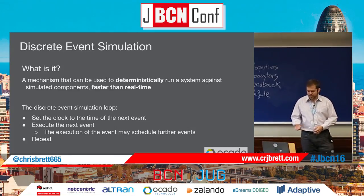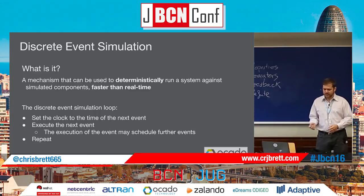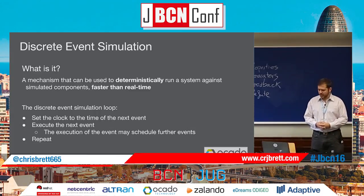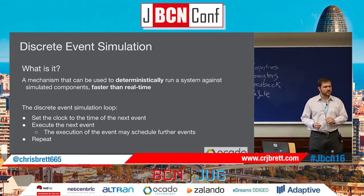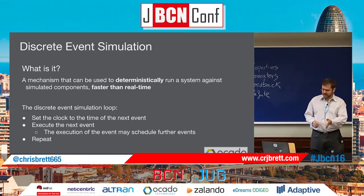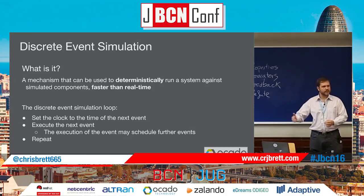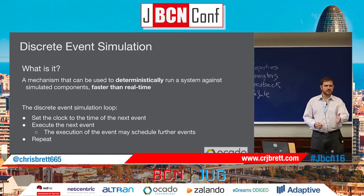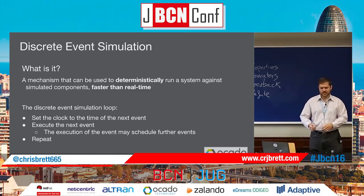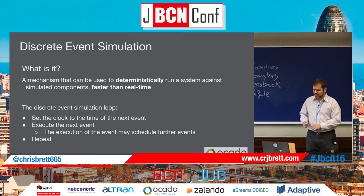A discrete event simulation loop might look like this: we set the system clock to the time of the next event and process that event. Processing that event might then schedule further events, and we'll repeat that loop — jumping to the time of the next event, executing that event, jumping to the next event and executing that event.